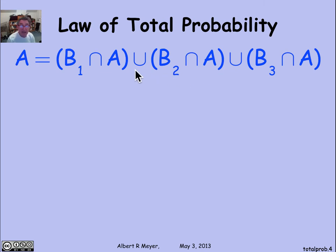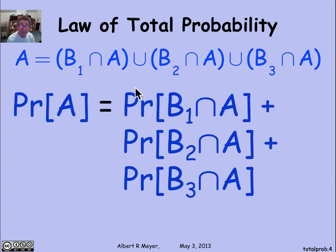That means that if I was talking about cardinality, I could add them up. But in terms of probability, I can apply the sum rule for probabilities and discover that the probability of A is simply the probability of B₁ intersection A, B₂ intersection A, B₃ intersection A.